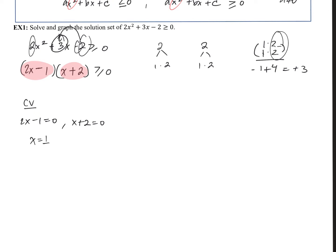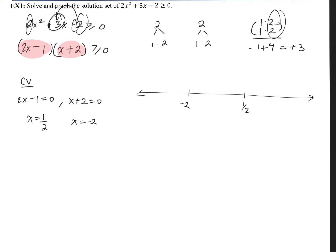Setting each factor equal to zero: 2x minus 1 gives x equals one half, and x plus 2 gives x equals negative 2. We're going to place these critical values on a number line and do some test points. You don't have to follow my exact format, but if you don't have your own, the format I use is pretty simple and straightforward.